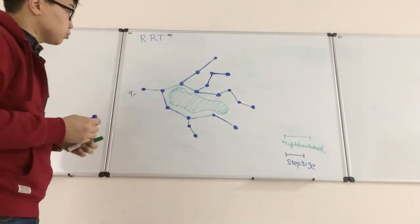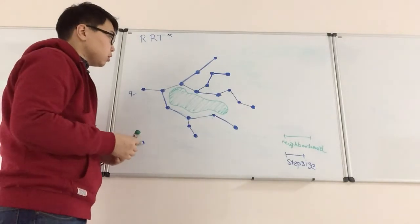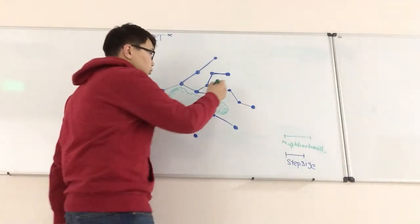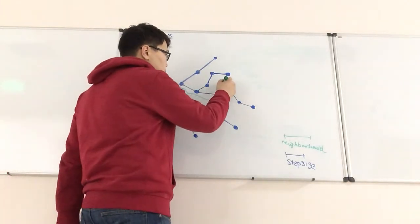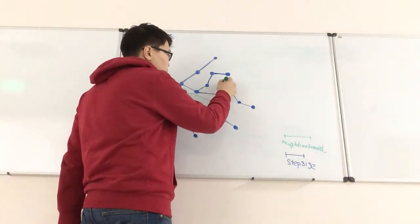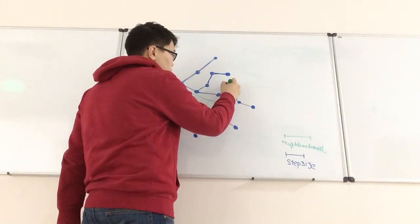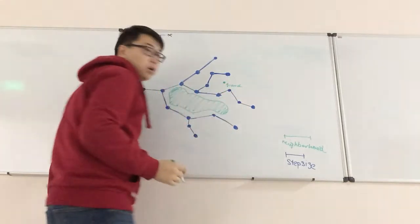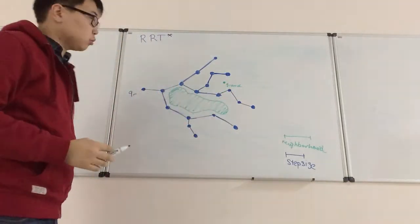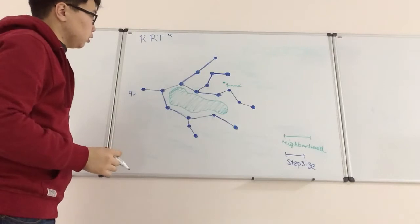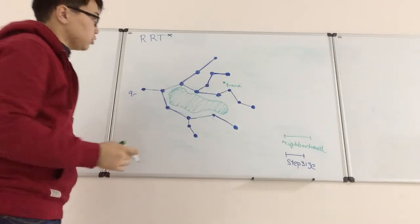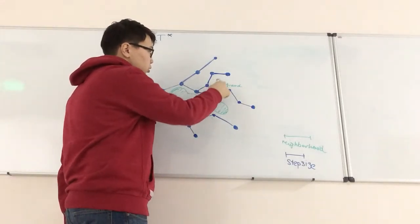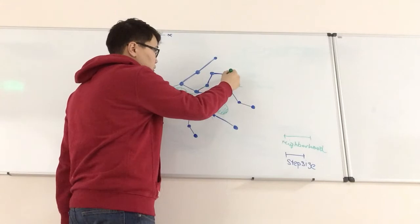Similar to RRT, the first step is to generate a Q_rand. It is a simple Q_rand — for example, it will be here. After that, we will find the nearest node. As you can see, the nearest node to Q_rand is this one.